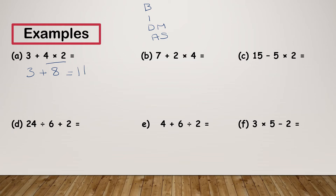In this next sum I've got 7 plus 2 multiplied by 4. Again, multiplication comes before addition, so I need to do my multiplication first. 2 times 4 gives me 8, so my sum actually says 7 plus 8, which is 15.